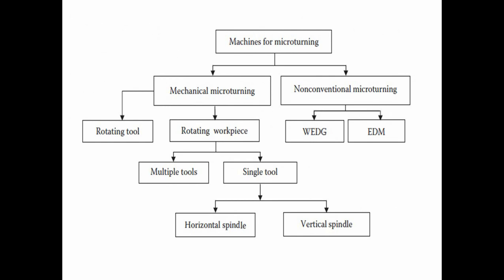Micro turning is carried out with different types of machines. The most popular configurations are tool-based machines, generally used for turning soft materials, whereas non-conventional type machines — namely electrical discharge machines and wire electrical discharge grinding — are used for turning hard materials and very small diameter electrodes that are difficult to machine by other means. For mass manufacture of micro turned components, machines with rotating tools are used when the raw material is in coil form, and machines with rotating workpieces and stationary multiple tools are used when the raw material is bar stock.